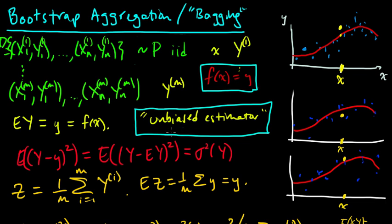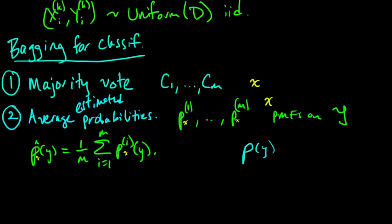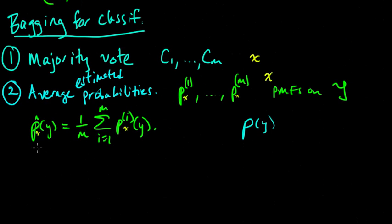And so the bagging technique, the aggregated probability is going to be a good estimator of the true probability, and then if we do the usual thing to classify, we would just classify X as the most likely class, according to this estimated probability. So that's how you can use bagging for classification.